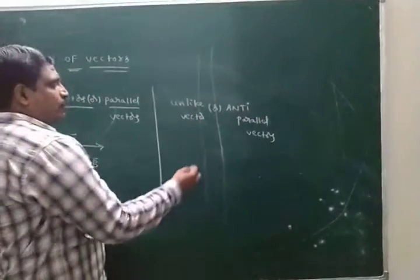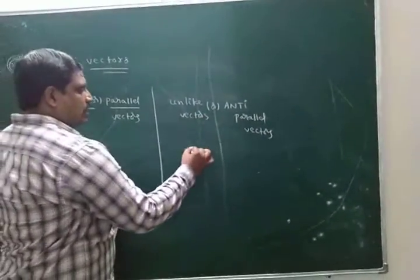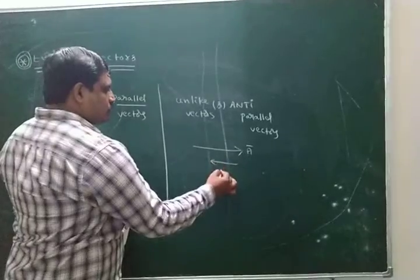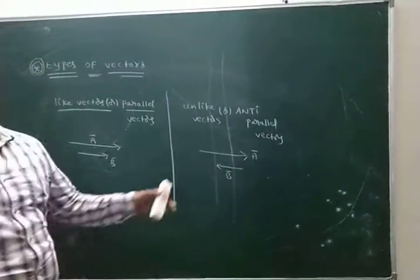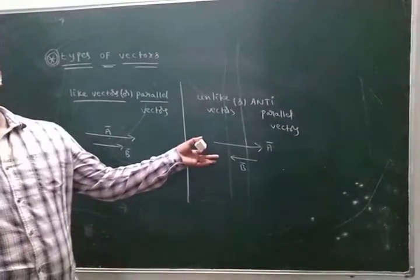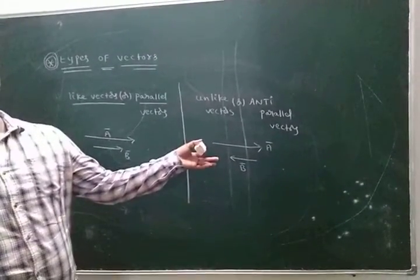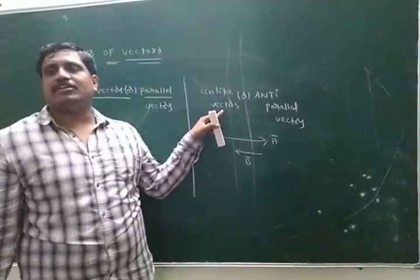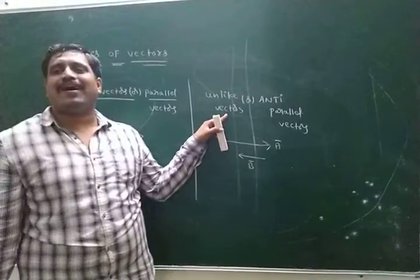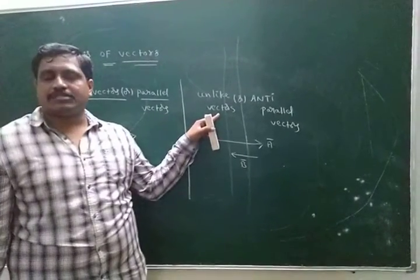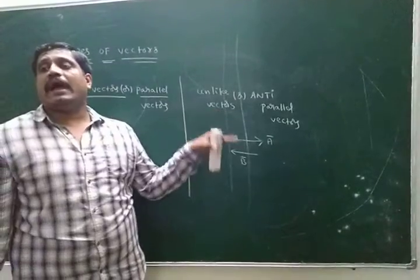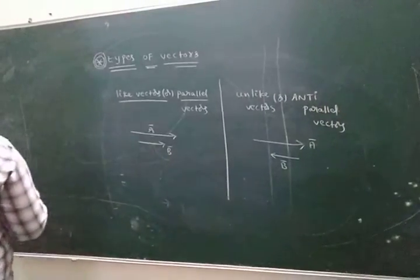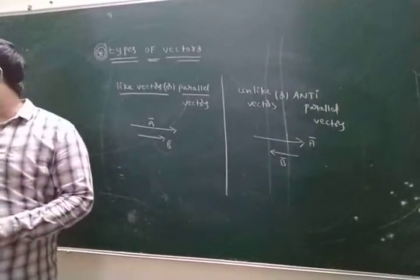Unlike vectors — this is A bar, this is B bar. Both have different magnitudes and are in opposite directions. That is why those two vectors are called unlike vectors, or anti-parallel vectors.